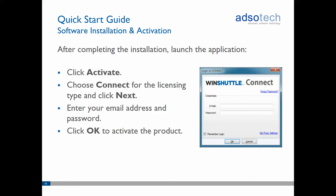This can be done by first clicking on Activate, then selecting Connect as the licensing type, and entering the user's email address and Connect password. At this point the Windshuttle application will connect to the internet and check that the user exists and has a valid software license in Connect. Once the account and license is validated, the application will launch and the user can start using the product.